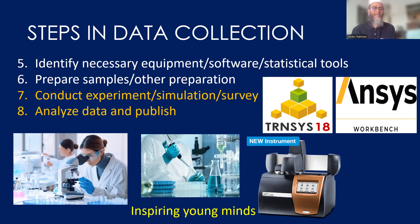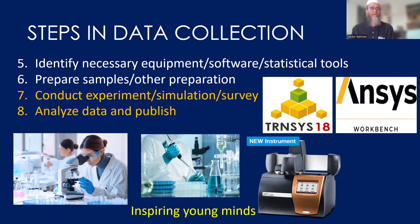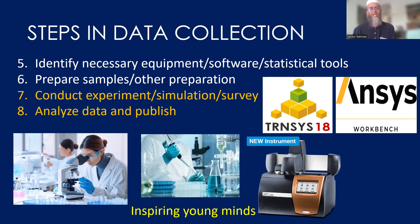Once you have identified necessary parameters, equipment, and software tools, and acquired necessary chemicals, consumables, and reagents, you need to prepare your samples before conducting the experiment. For example, if you have nanomaterials, you determine what type — one material or two hybridized materials — and the concentration, such as 0.1%, 0.2%, 0.3%, and so on. You prepare one, two, or five samples. Once you have the samples and necessary preparations, you can conduct the experiment, model, or simulation.